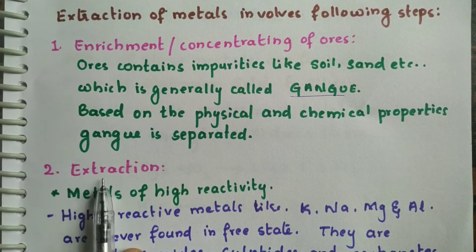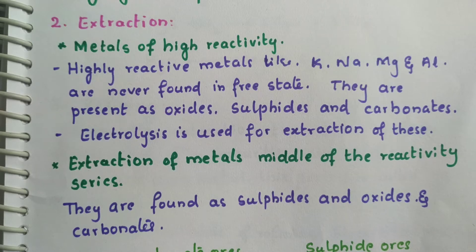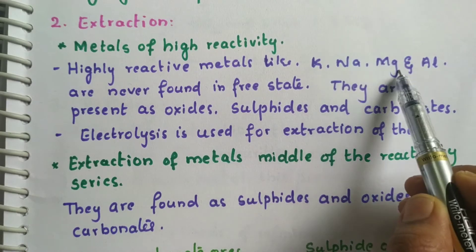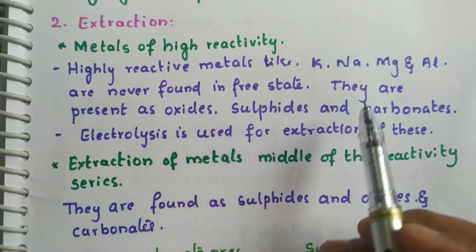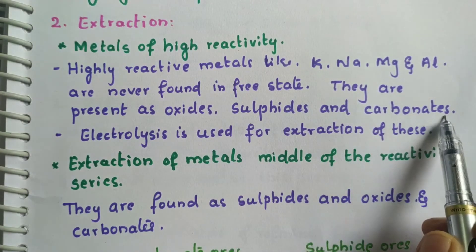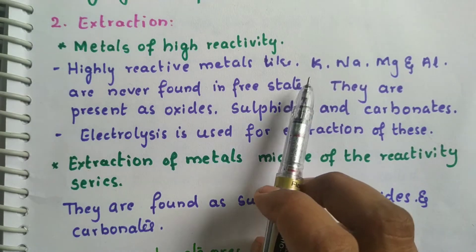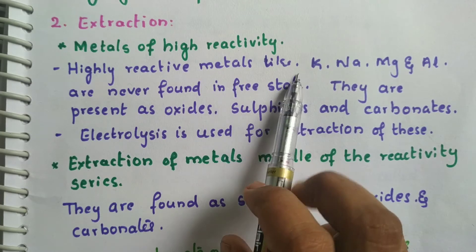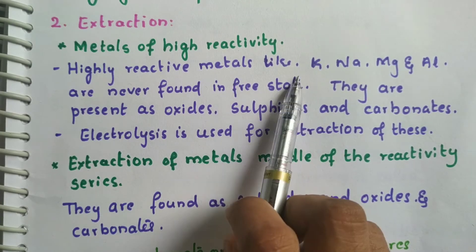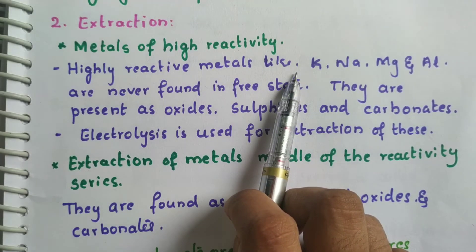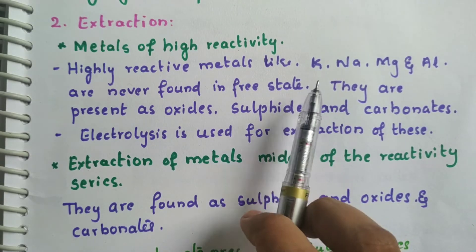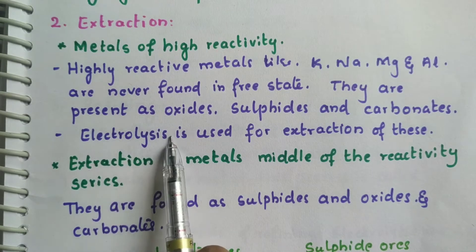Different methods are used for different metals based on their reactivity. Highly reactive metals like potassium, sodium, magnesium, and aluminum are never found in their free state — they are found as sulfides or carbonates. We use electrolysis for them because they form a very strong bond that reducing agents cannot break.